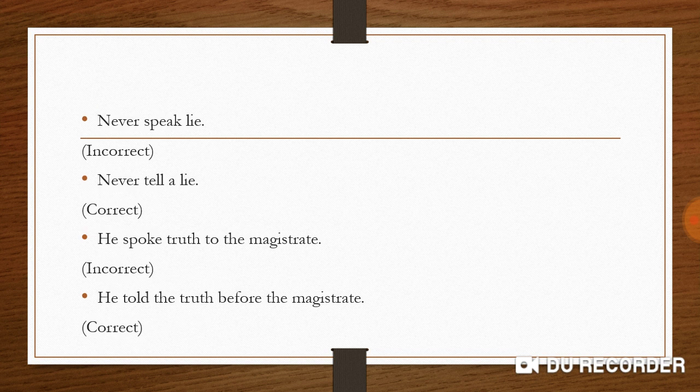Next: 'Never speak lie.' 'Speak lie' is incorrect — the correct expression is 'tell a lie,' and the article 'a' is always used with 'lie.' So: 'Never tell a lie.' Similarly, 'He spoke truth to the magistrate' is wrong in two ways — it should be 'told the truth' and 'before the magistrate,' not 'to.' Correct: 'He told the truth before the magistrate.'